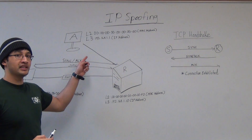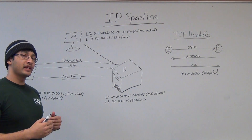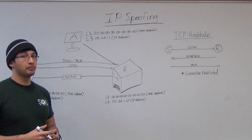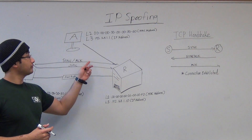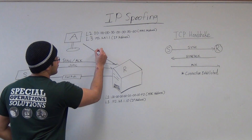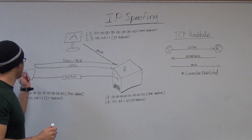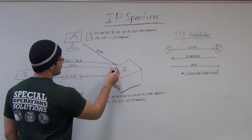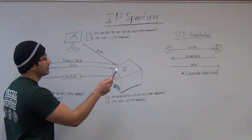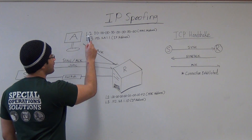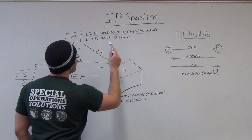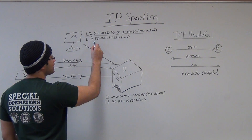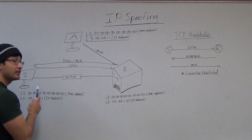The attacker does this by predicting the TCP sequence number. Inside the TCP header, there is a source, a destination address, and a sequence number. Because he's able to predict it, he's able to send the acknowledgement before the sender. The receiver is going to trust the attacker — trusting that the layer two MAC address or physical address will route the packet to the layer three IPv4 address 192.168.1.1, which belongs to the sender.